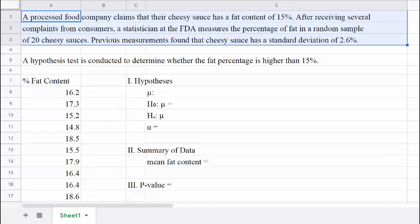Here's the setup. A processed food company claims that their cheesy sauce has a fat content of 15%. After receiving several complaints from consumers, a statistician at the FDA measures the percentage of fat in a random sample of 20 cheesy sauces.